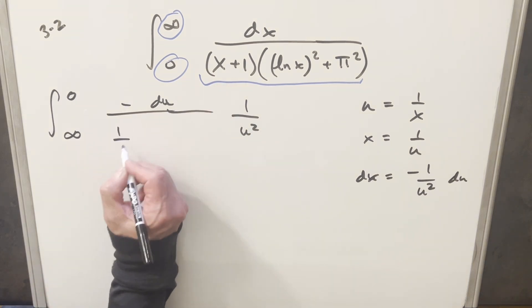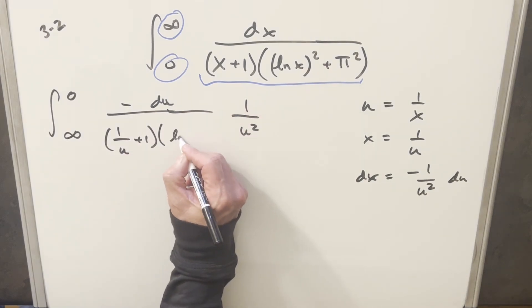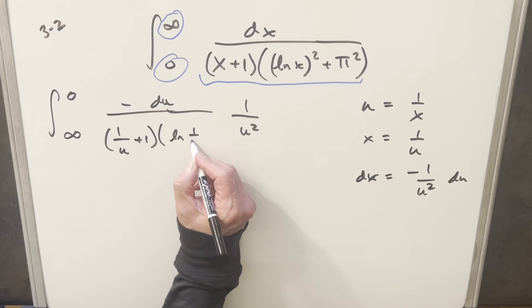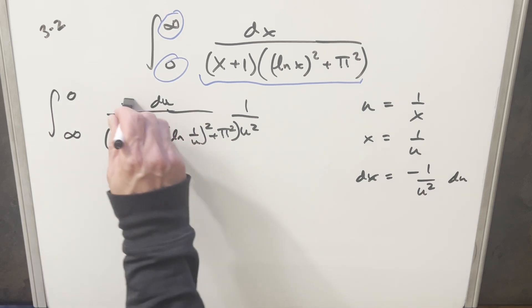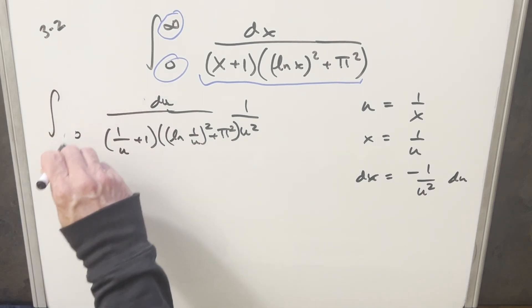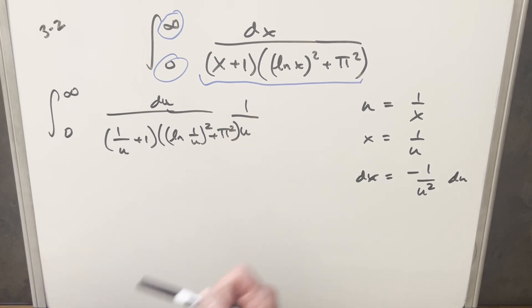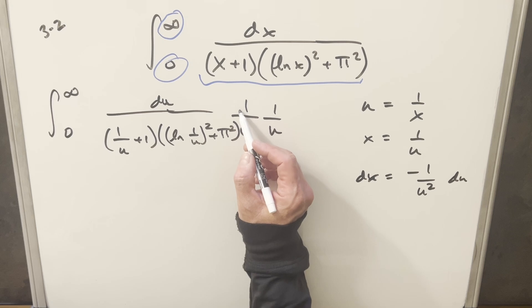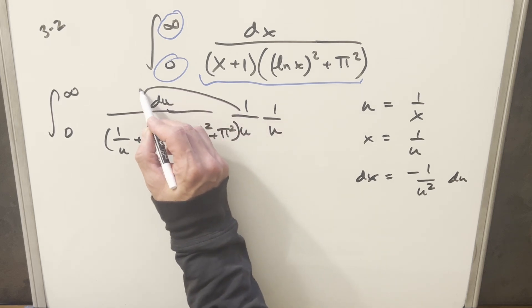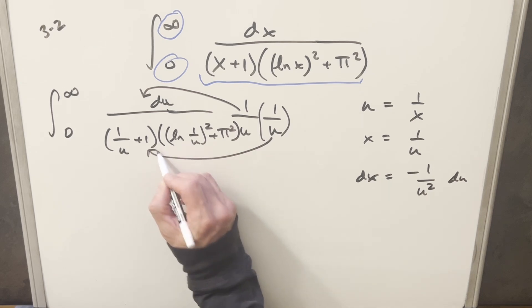Now for x, that's going to be 1 over u, we'll have our plus 1. Then this thing is all going to become natural log 1 over u all squared plus pi squared. But then I can take this minus sign here, and we can just use this to flip our bounds over here. And then for this 1 over u squared, what I'm going to do is I'm going to actually break it up. I'm going to write it as 1 over u times 1 over u. So that way, what I'll do is I'll take one copy and bring it into the numerator.